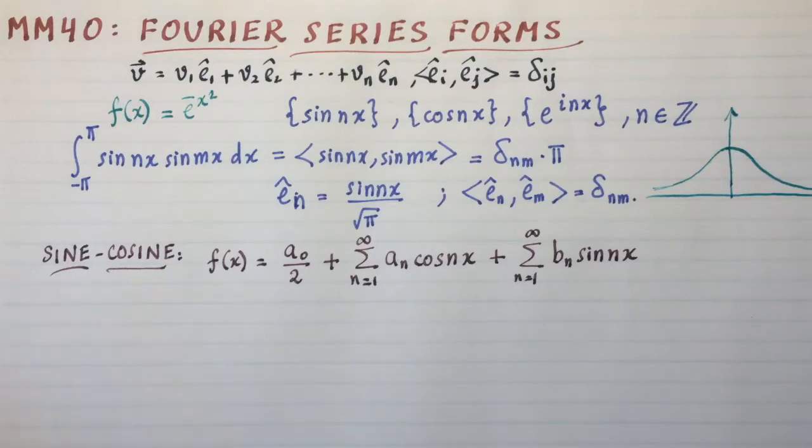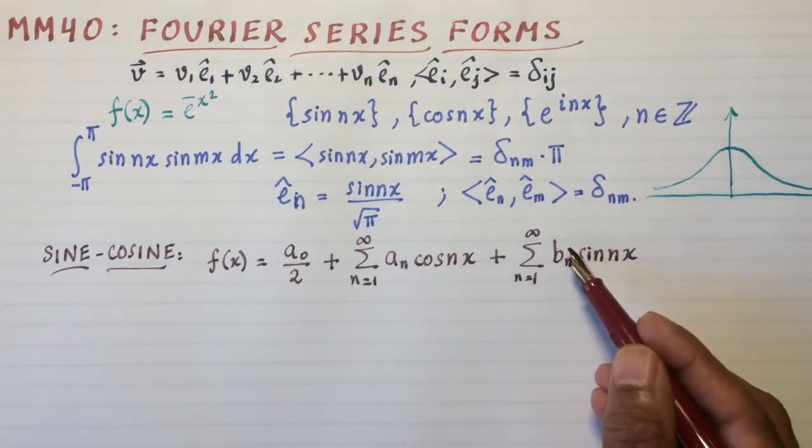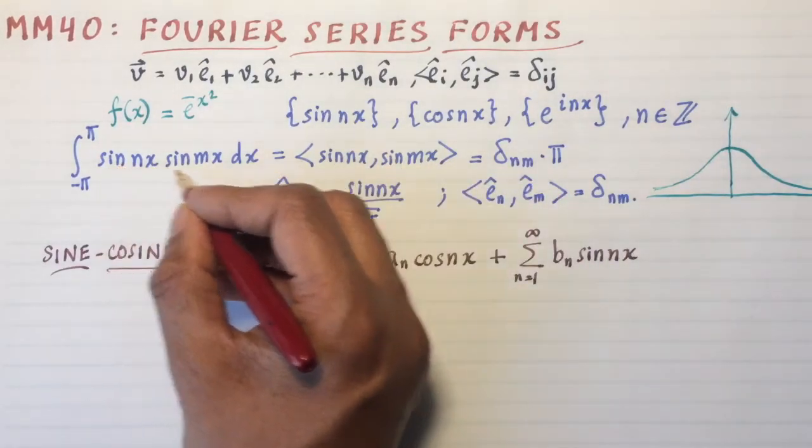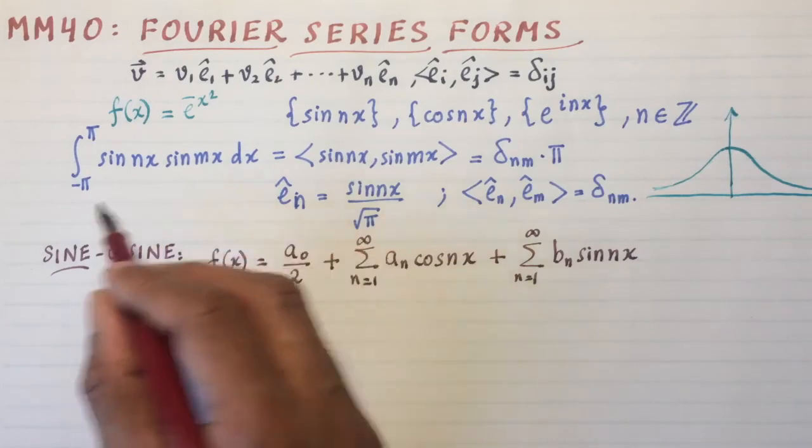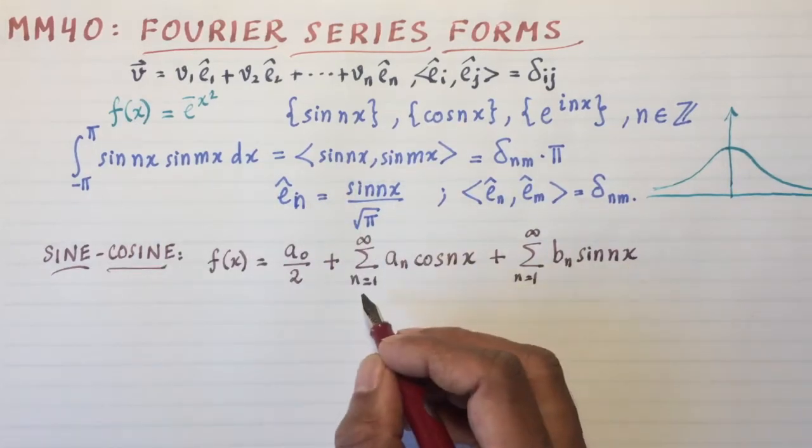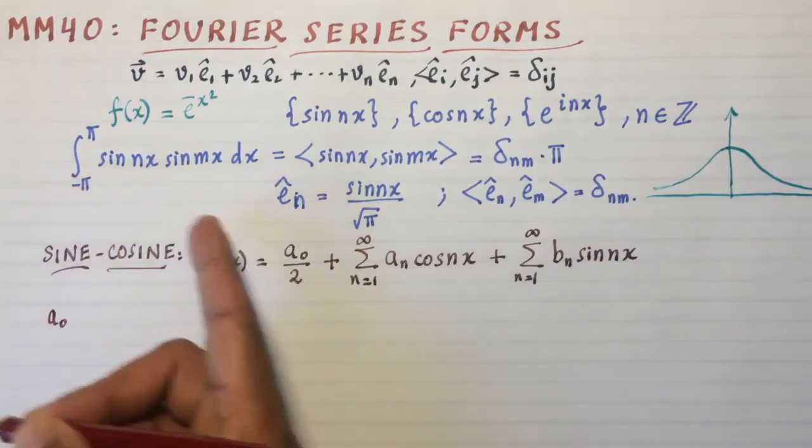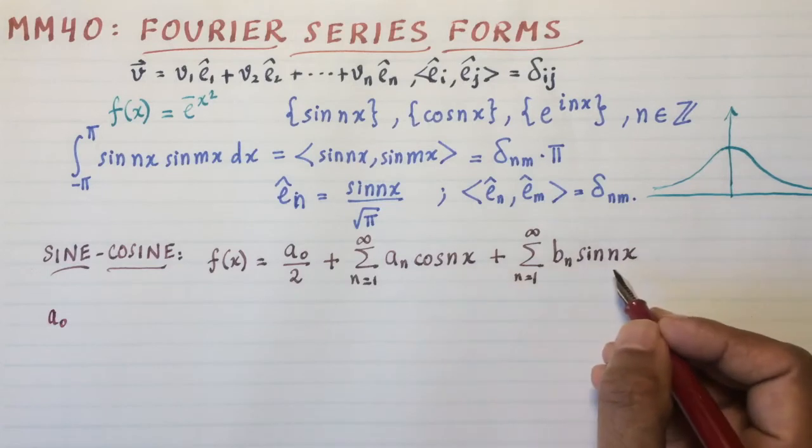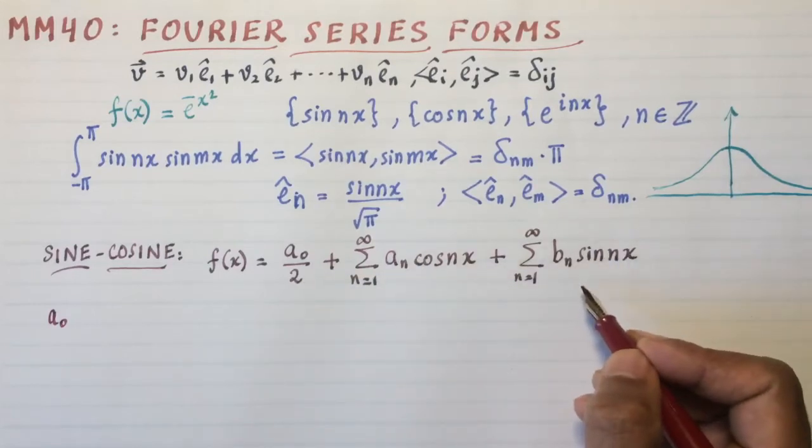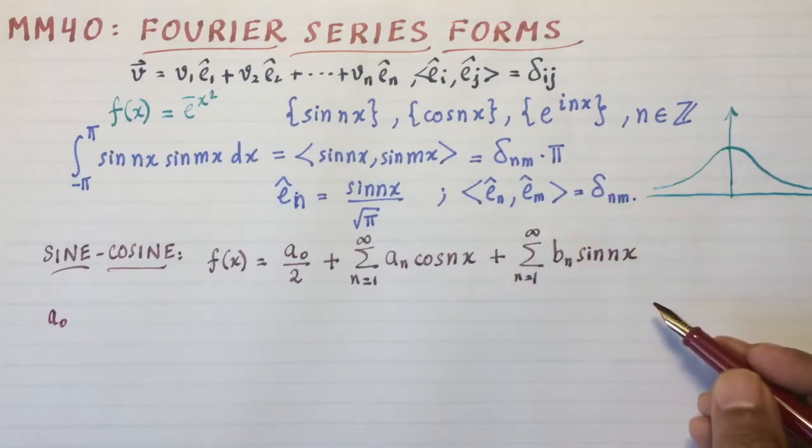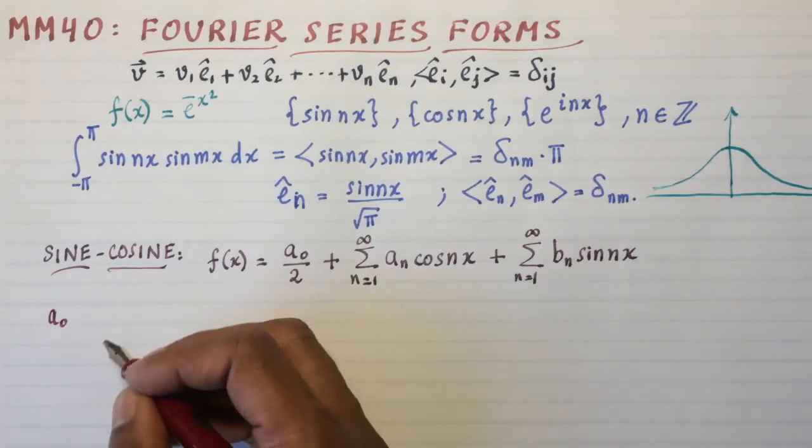Now once you have this decomposition, then you can write down what a_0, a_n, and b_n are, simply in terms of the orthonormal relationships there. Now remember, if you multiply cosine, oh by the way, cosine and cosine always gives you zero, and sine and cosine always gives you zero. Those are also standard facts of these bases. So if you want to find a_0, what you do is you multiply both terms, both sides of this equation with whatever kills these terms. That is simply killed by integrating sine and cosine over -π to π, because sine and cosine over that interval will have equal amounts of positive and negative areas.